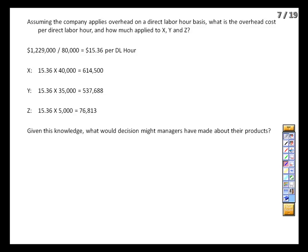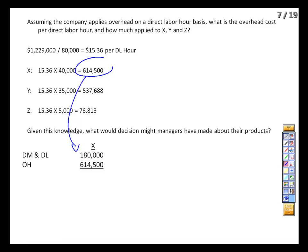So now we've got all the information we need for our costing. Let's lay it all out and analyze it. For Product X, we've got $180,000 of direct labor and direct material costs as given. And then we apply the overhead we just calculated — that's the $614,000.